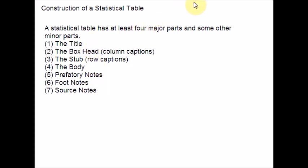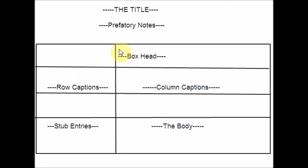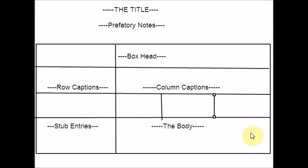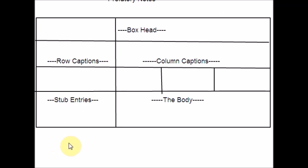The general sketch of a table indicating its necessary parts — I am going to show that on the board. There should be a title and prefatory notes about the title and the box head. Then you will have row captions and column captions. Here would be the stub entries and the body of the table. Here you can write the footnotes and source notes. This is how the table will look like.